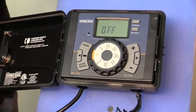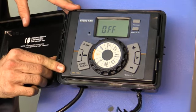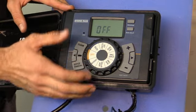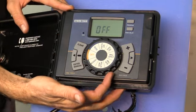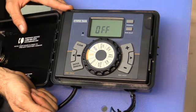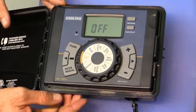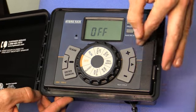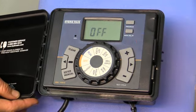So just taking a look at it, what do we see? We see clear, enter manual. We have off, run, set clock, date, start time, run time, how often, budget. We're going to go through all those. Program up here, rain delay, and then we have test cycles - that's how we're going to go up and down.